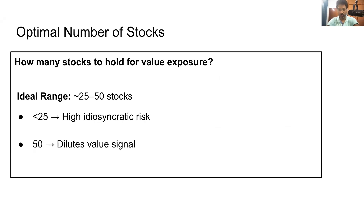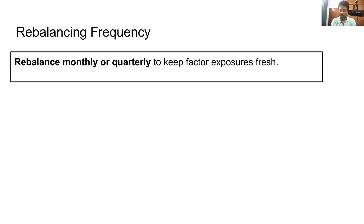The first takeaway is: have a diversified portfolio. They also quantified the number — anywhere between 25 to 50 is optimal for value factor exposure. For a DIY investor, an ideal number would be 25 to 30. The NSE indices reflect this: Nifty 500 Value 50 has 50 stocks, Nifty 200 Value 30 has 30, and Nifty 50 Value 20 has 20 — a range of 20 to 50, same as the research insight. Going below 20-25 adds noise; going above 50 risks getting market exposure rather than value exposure.